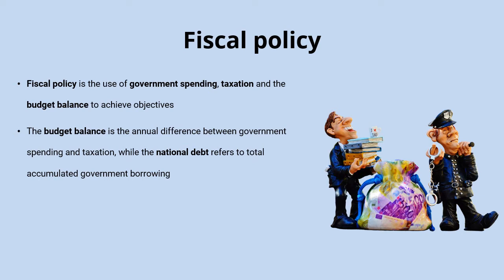If government spending was 800 billion but we had 850 billion coming in from taxation, then we could talk about a budget surplus of 50 billion pounds. It's really common to get budget deficit confused with the national debt, which is the total accumulated government borrowing — not just the difference in one year, but the accumulation of all the borrowing to cover these deficits over time.